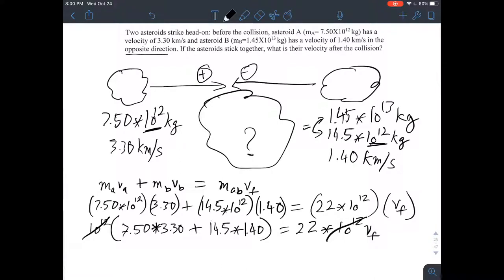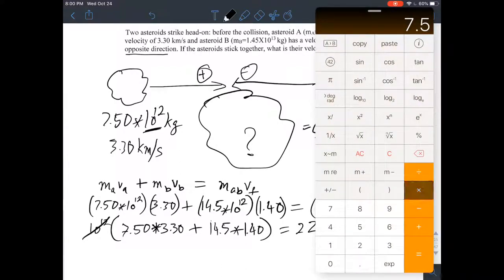And if you sum all this up, what do you end up with? Let's see. 7.5 times 3.3, 24.75. Oh, I'm making a mistake. Oh yeah, this is good. They're in opposite directions. So, let's fix that. This should be minus. So, it's more like plus minus, because of the direction of the velocity. And minus. There's a little minus there. So, let's go back. 24.75 plus, and again, the minus sign, 14.5 times 1.4. Okay. 20.3. Right? Because they're going in opposite directions. And that's 22 VF.